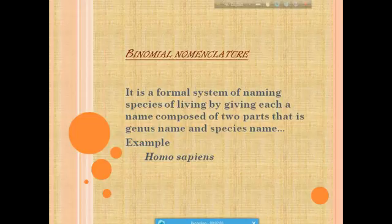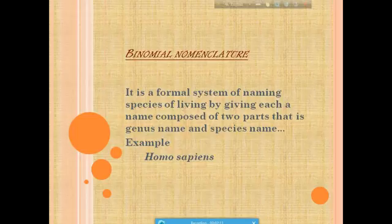According to binomial nomenclature, long names were cut short so that they could be used with greater convenience. The system postulates that every individual of the plant and animal kingdom consists of only two words in Latin.